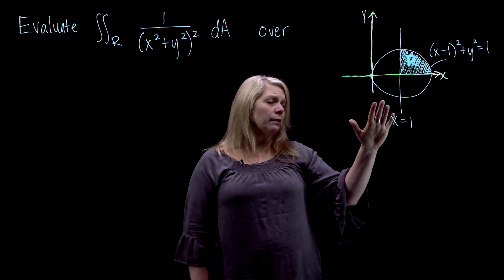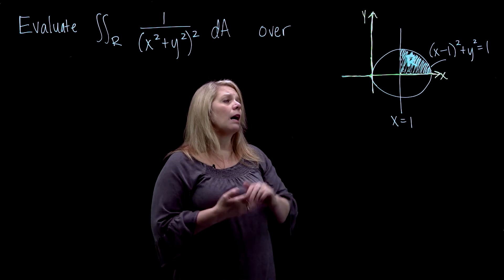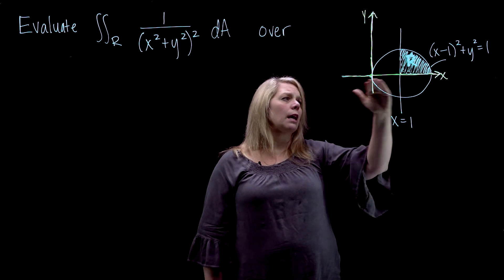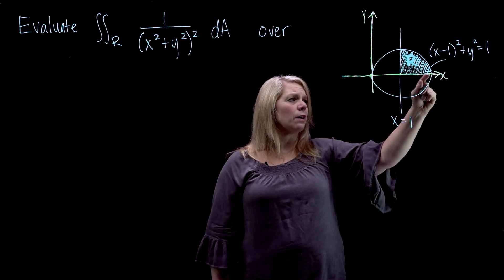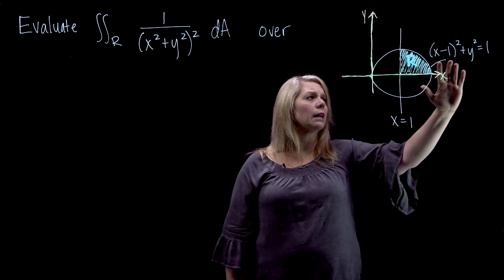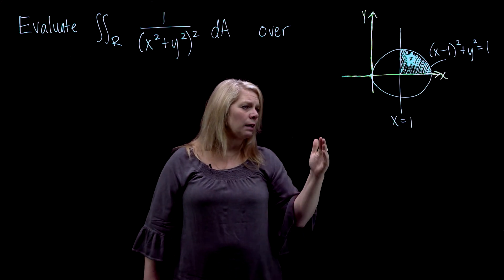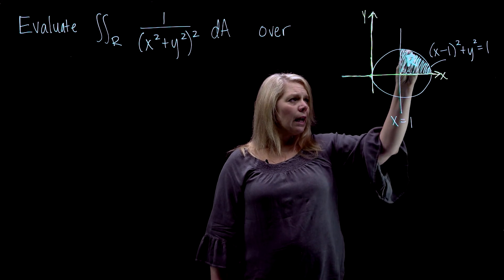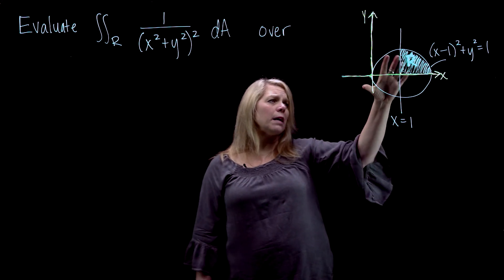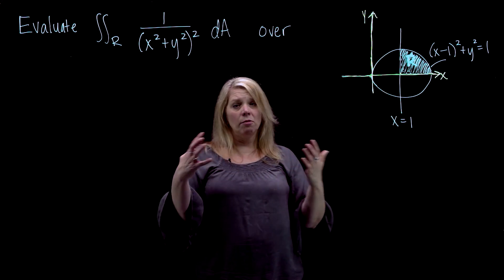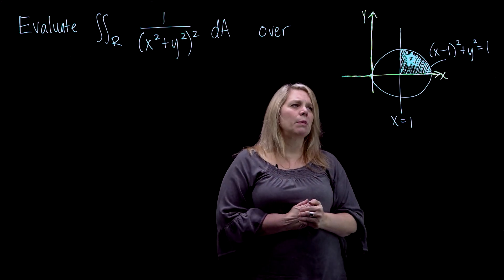You also need to think about whether the region is x simple, y simple, r simple, or theta simple. This region — I want to make sure you understand what we're looking at. I've got my x and y axes, and then we've got this circle which is not centered at the origin. Looking at the equation of the circle, the center is at (1, 0) and the radius is 1. We've got this line at x equals 1, and that gives us our region. If my circle were centered at the origin, the region would be screaming polar coordinates at you.